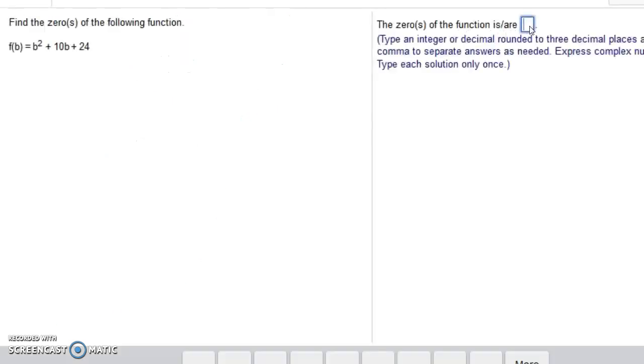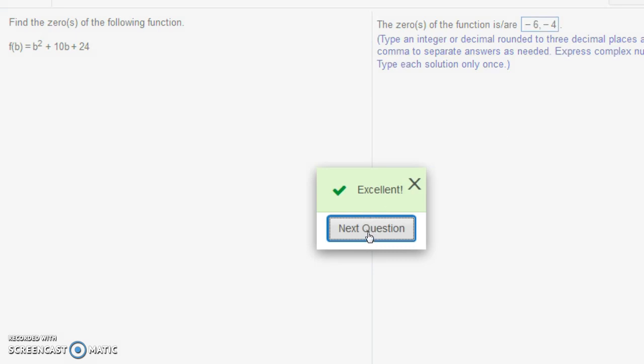So if we go back over here to the problem, we can type in negative 6 and negative 4. So let's put a comma between our answers. It doesn't matter which order you write them in. You could write the negative 4 first and the negative 6 second. But notice we get the correct answer.